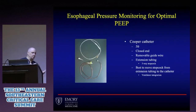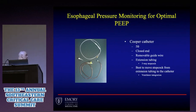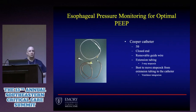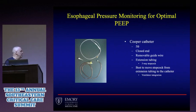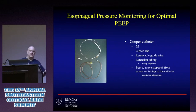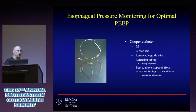The catheter itself is a 5-French catheter costing about $30, so it won't break the bank. It's closed on the end, so you can't infuse anything through it or put material in the wrong place. There is a removable guide wire — many facilities recommend leaving it in place in case the catheter needs repositioning, because once you pull it out, it won't go back in. It comes with extension tubing and a three-way stopcock.